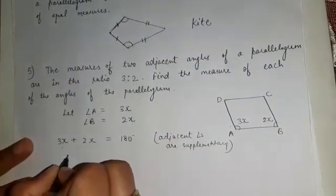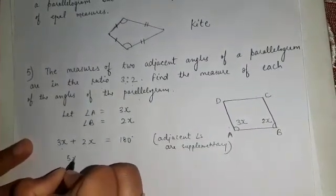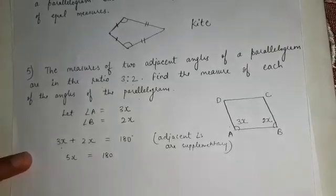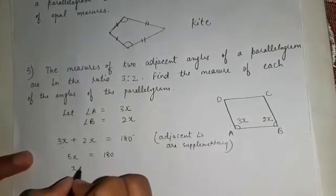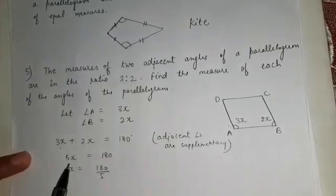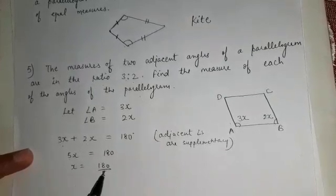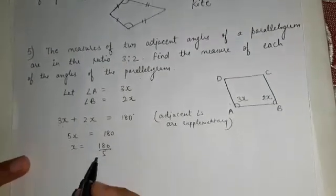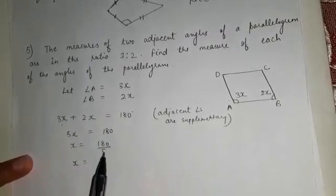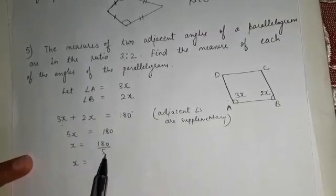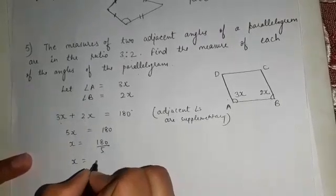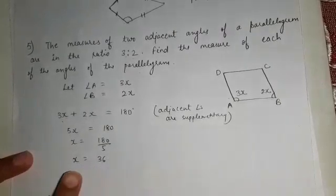Let us solve this equation. 3x plus 2x equals 5x. So 5x equals 180 degrees. x is equal to 180 divided by 5. And 180 divided by 5 is 36.